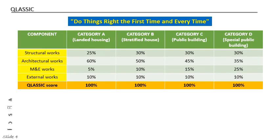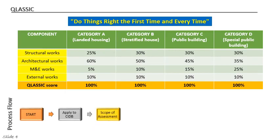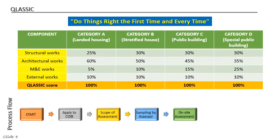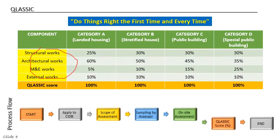If you want to measure your quality of work, you can apply with CIDB. You contact CIDB saying you want to measure your quality of work using QLASIK. CIDB will process the application and identify the scope of assessment by looking at the category of your building — for example, if your project is a landed house, you fall under Category A. CIDB will then appoint an assessor who must be certified by CIDB, as only certified persons can use QLASIK. The assessor will come to your site and carry out the assessment based on the four elements.